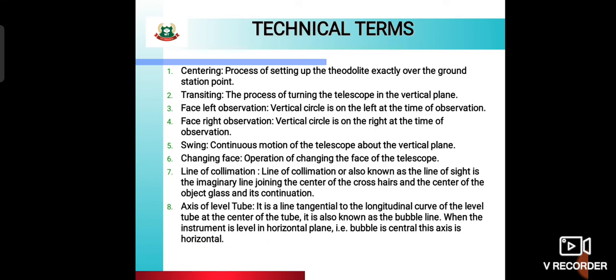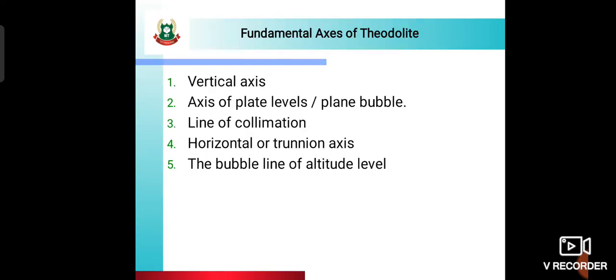Axis of level tube: it is a line tangential to the longitudinal curve of the level tube at the center of the tube, also known as the bubble line. When the instrument is level — that is, the bubble is at the center — this axis is horizontal. If the bubble is at the center, your total station is level and the axis is horizontal.